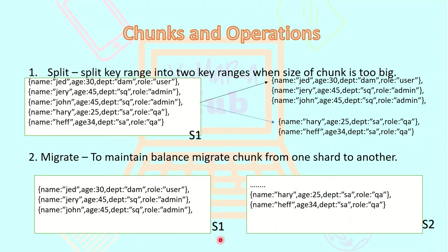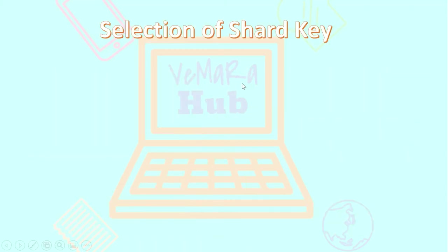The split documents are then migrated to another shard, say S2. The migration process works as follows: the split documents are first copied from shard S1 to S2, then the metadata is updated so that the split documents are now in the new shard S2, and later the split documents are removed from the original shard S1. All these operations happen automatically and are done by the balancer.